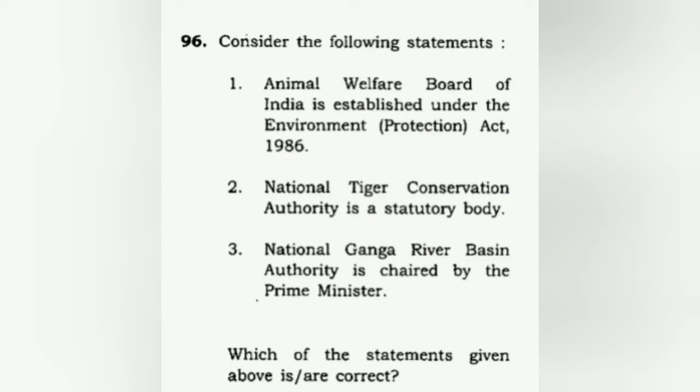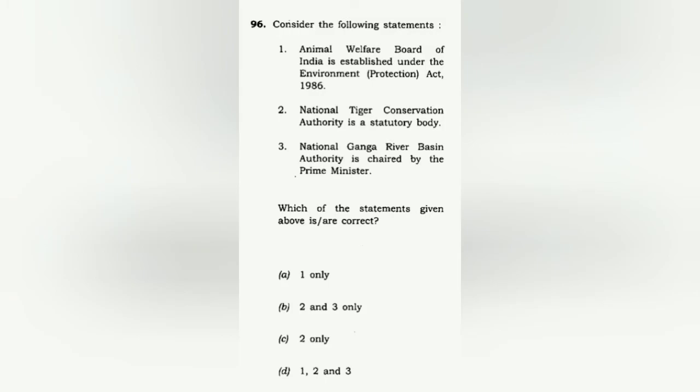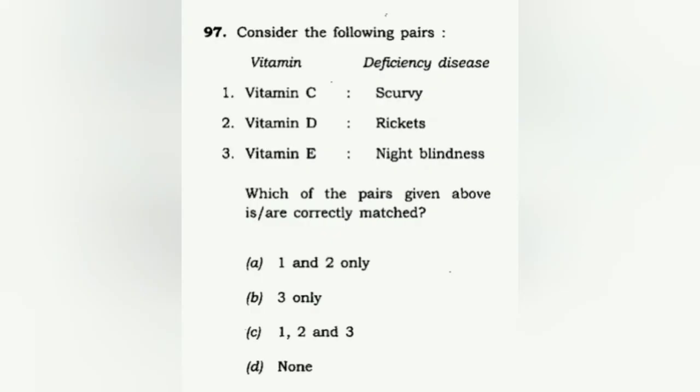Consider the following: the Animal Welfare Board of India established under the Environment Protection Act 1986, the National Tiger Conservation Authority as a statutory body, and the National Ganga River Basin Authority chaired by the Prime Minister. The third is correct. The second is also correct — it is a statutory body. The first is incorrect because the Animal Welfare Board of India is established under the Prevention of Cruelty to Animals Act, 1960. The correct answer is B: two and three only.